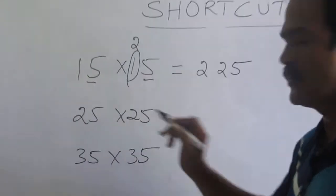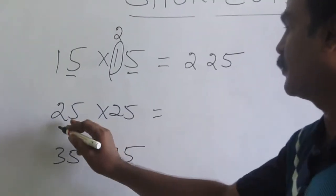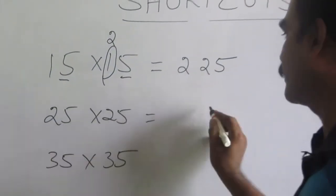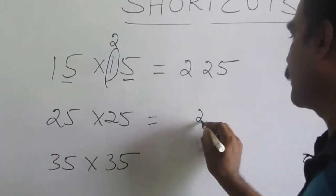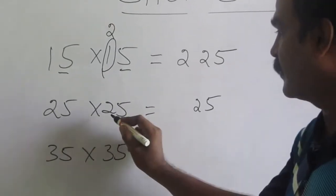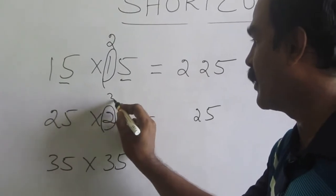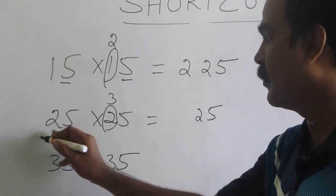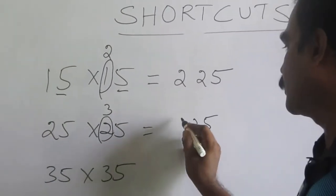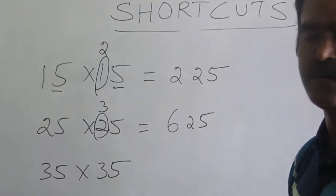25 times 25. The last two digits are ending with 5, so 5 times 5 is 25. What will be the first term? Just increase one more number here. What is 2 times 3? 6. So my answer is 625.